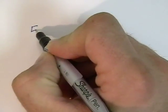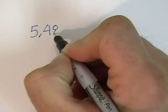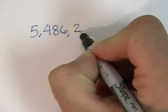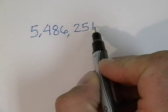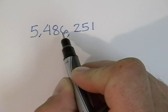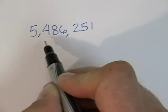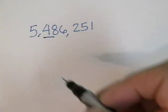Here's the number again: 5,486,251. If I said to round to the nearest one-hundred-thousand, the first thing we need to do is identify the hundred-thousandths place. So we count from the right: ones, tens, hundreds, thousands, ten-thousandths, hundred-thousandths. So we underline the hundred-thousandths place.